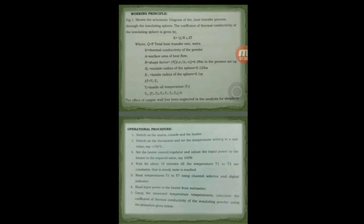This determination of thermal conductivity of the insulating material follows Fourier's law of heat conduction, which is given by the equation Q equals KA dT by dx. Q is the heat transfer, A is the surface area of heat flow, K is the thermal conductivity of the insulating material.